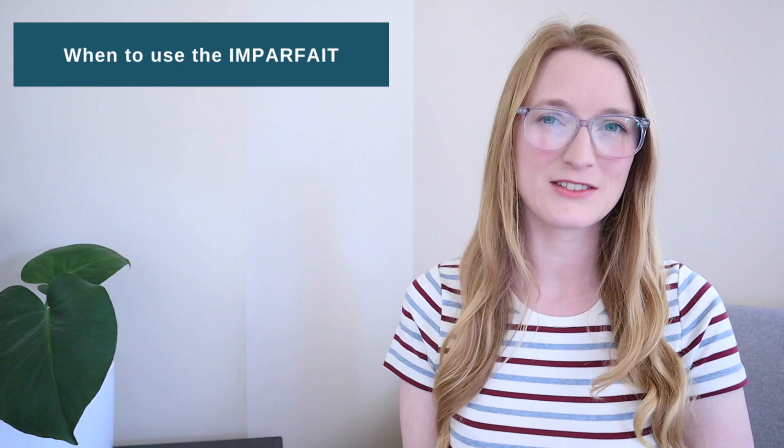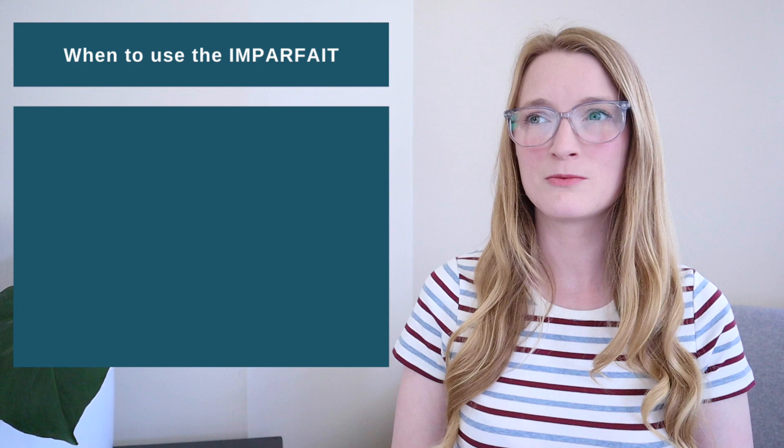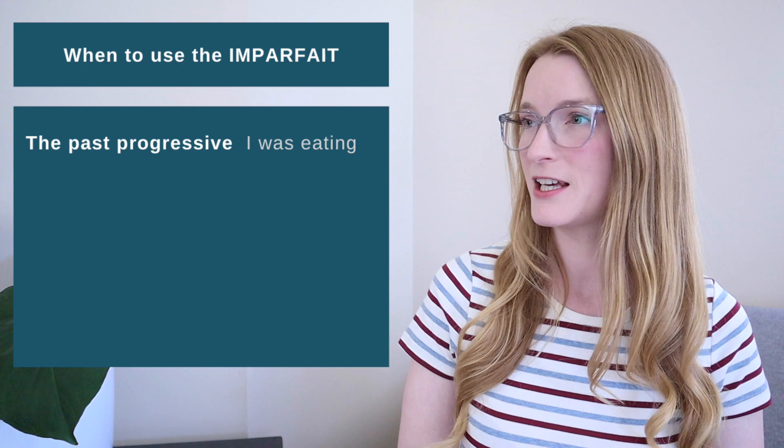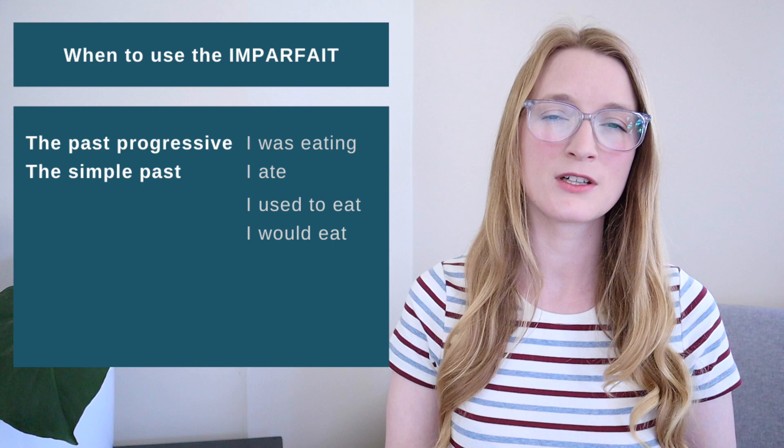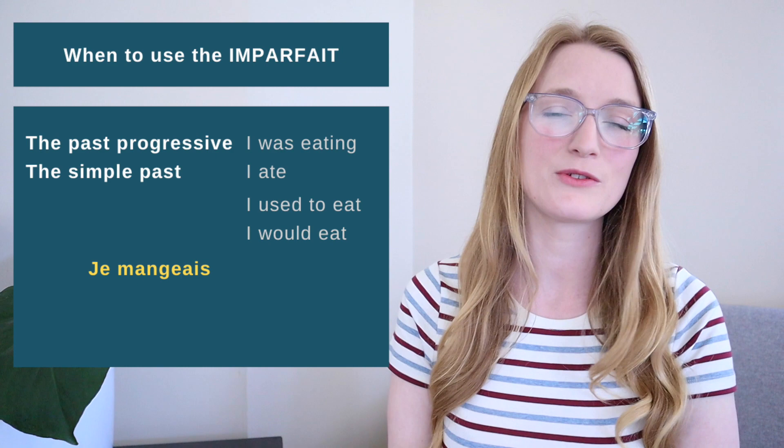The imparfait is the other tense of the past that we use a lot, just like the passé composé. We can translate it to two main tenses and two extras. We have the past progressive — for example, 'I was eating' — or the simple past: 'I ate.' The two extras are 'I used to' and 'I would,' very important: in the past. So all of them can be translated to 'je mangeais.'